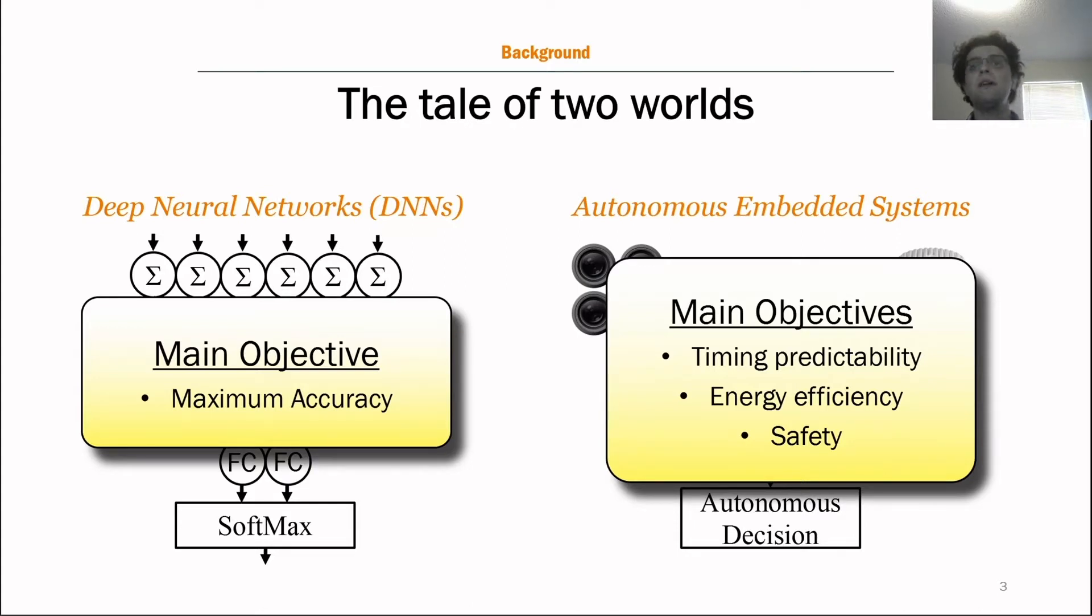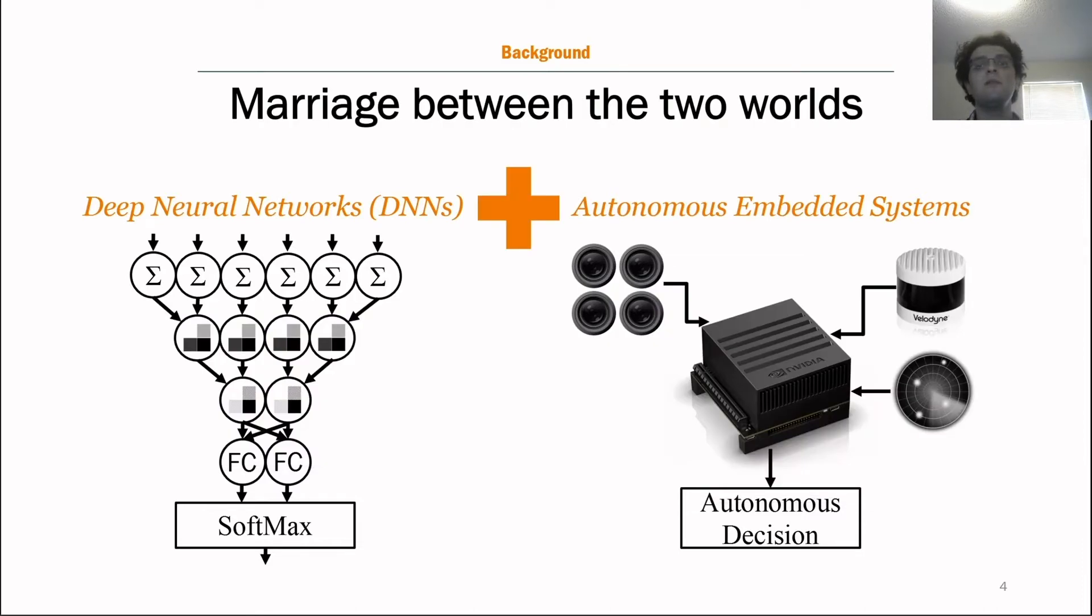However, we came across the marriage of these technologies while working with the open source autonomous driving software, AutoWare, which uses neural networks for object detection, image recognition and even localization. And all these DNNs share the same architecture. This has resulted in other projects and publications which we won't discuss here. However, we were interested in how this marriage is addressed in the literature.